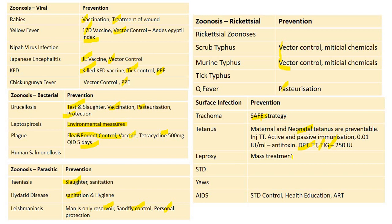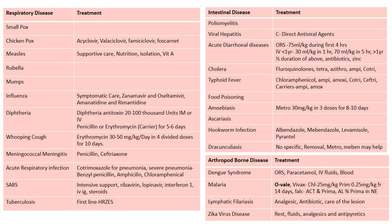Q fever: pasteurization. Trachoma: SAFE strategy — S for surgery, A for antibiotic, F for facial hygiene, E for environmental sanitation. Tetanus: maternal and neonatal tetanus are preventable by injection TT, active immunization, and passive immunization with anti-tetanus serum. DPT, TT immunoglobulin, and RIG are targeted at preventing tetanus. Leprosy: mass treatment can be given. AIDS: STD control, health education, ART, and promotion of safe sex.